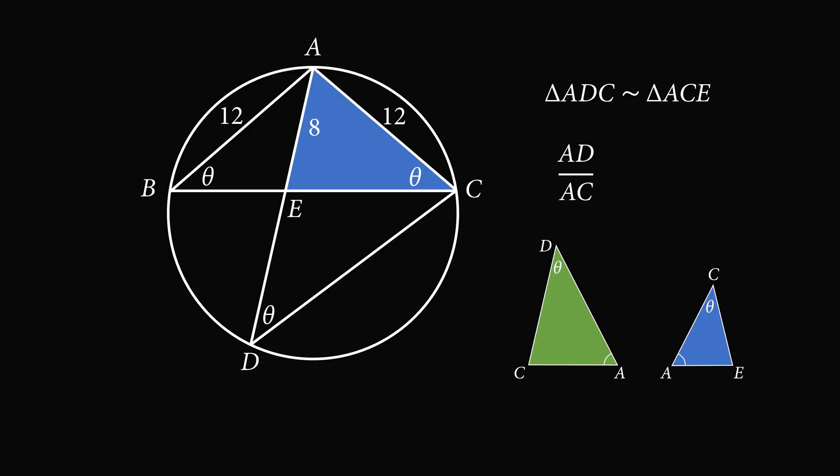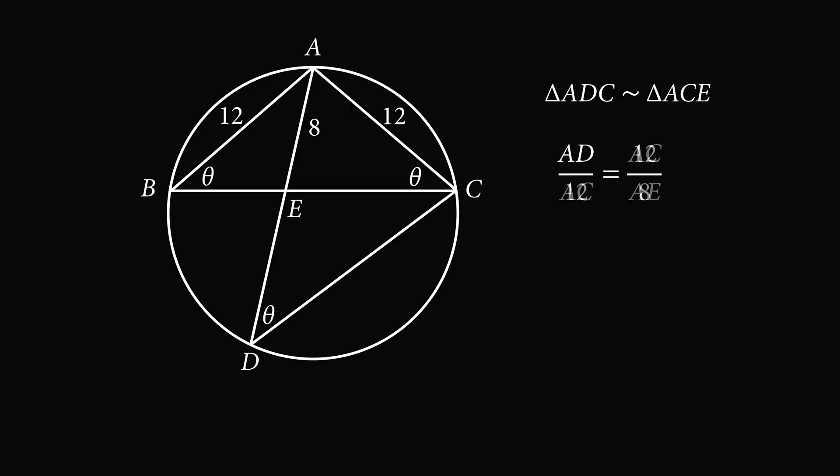Therefore, we have AD over AC in the green triangle is equal to AC over AE in the blue triangle. But we know that AC is equal to 12 and AE is equal to 8, so we can solve for AD.